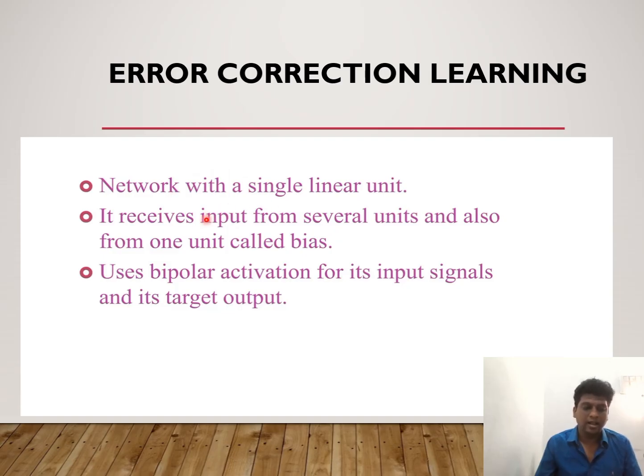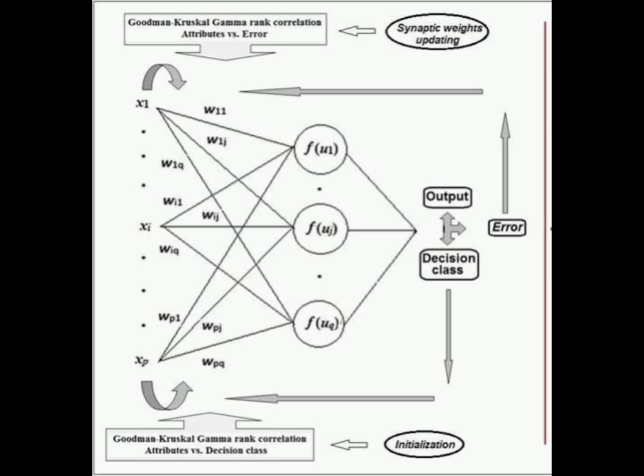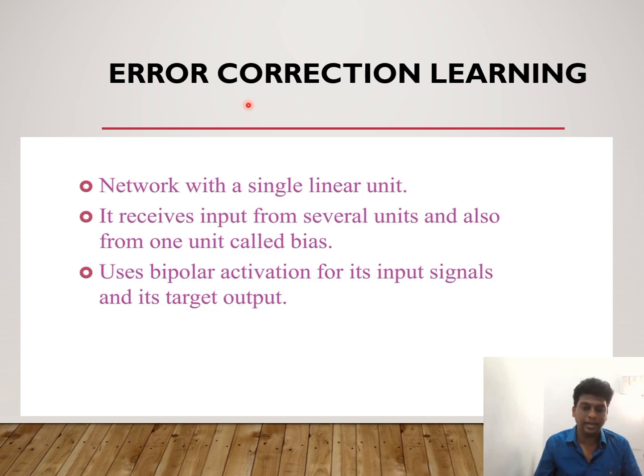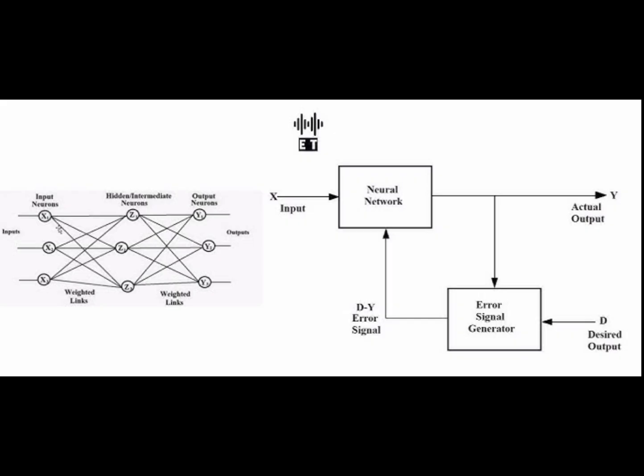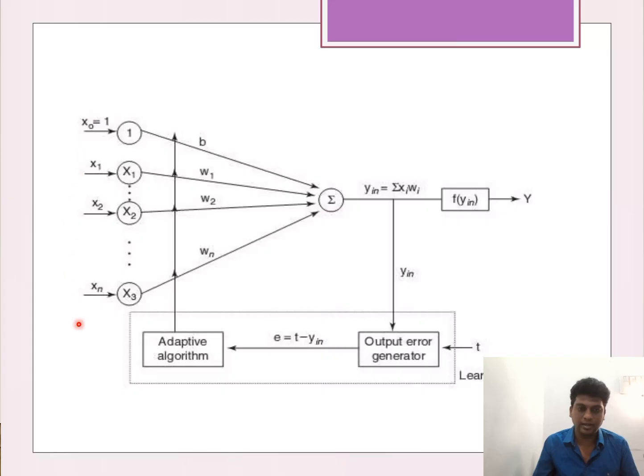Error correction learning is a technique of comparing the system output to the desired output value and using that error to direct the training. Error correction can be handled by two mechanisms: number one is backward error mechanism, and the next is forward error mechanism. These error values can be used to directly adjust weights using an algorithm. Here the input layers, biasing, and weight layers are shown. After getting the predicted output, we compare it with the actual output. Error is found and by adaptive algorithm rule we can update the weights.